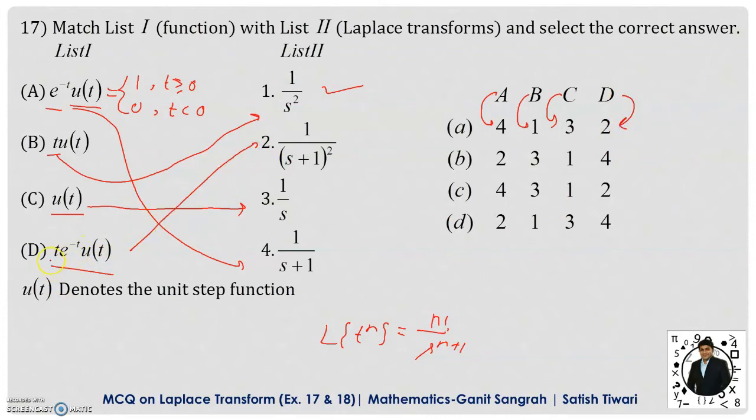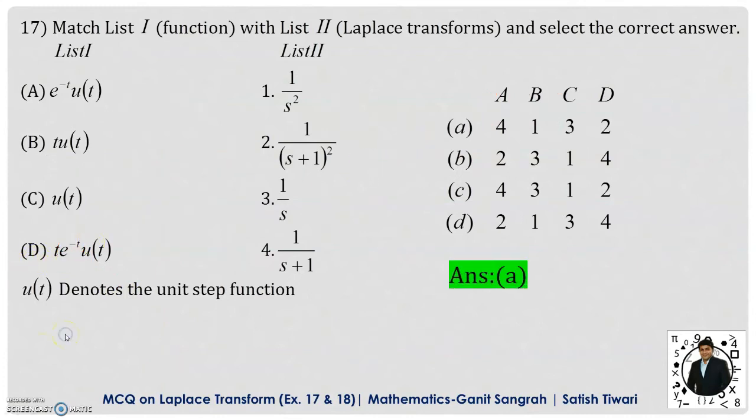Here what we do? We find out the Laplace transformation of t, and that is given by 1 by s square. And in this 1 by s square, I replace s with s plus 1 because it is multiplied with e to the power minus t. Therefore, we have option 2 as correct option for D. Hence, the required answer is A.